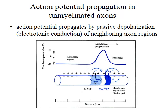Now that we understand the membrane time constant and the membrane length constant, we're in a position to discuss how action potentials are propagated down axons. We'll begin our discussion by talking about action potential propagation in unmyelinated axons.